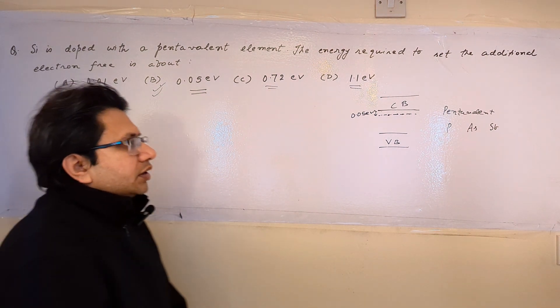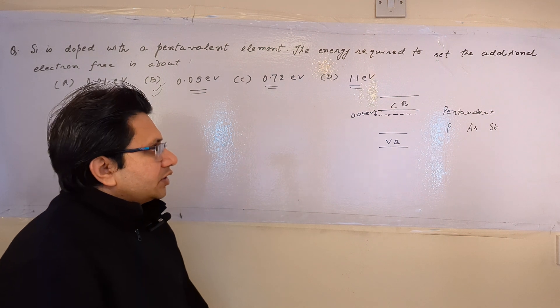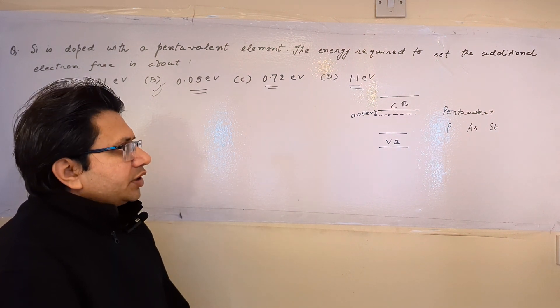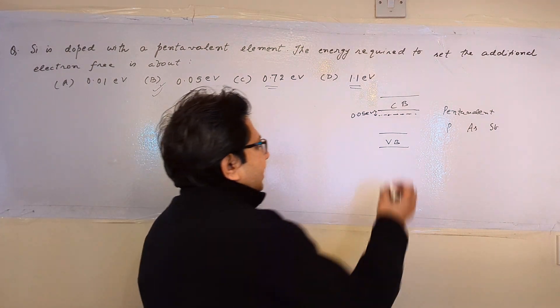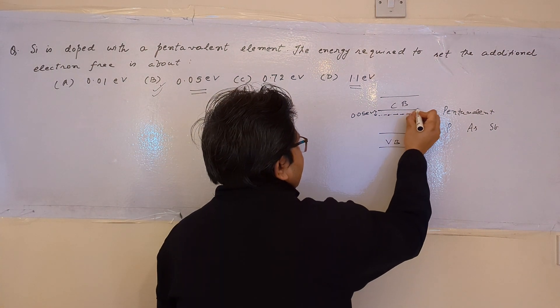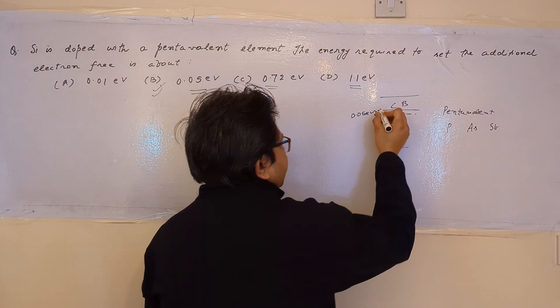In pentavalent impurities or n-type elements, the electrons reside just below the lower level of the conduction band. This is the value of 0.05 electron volts.